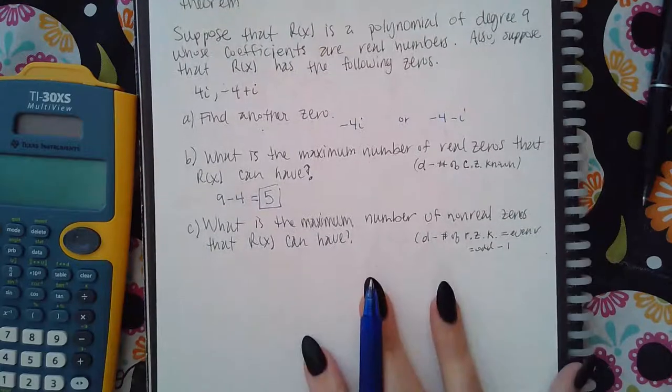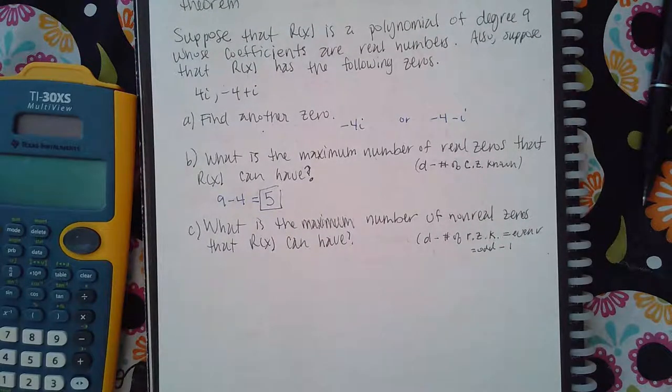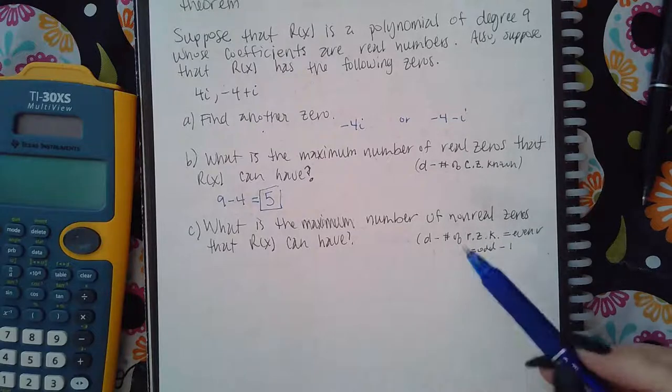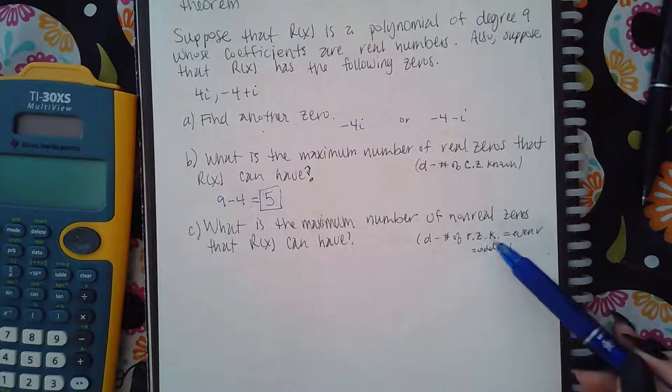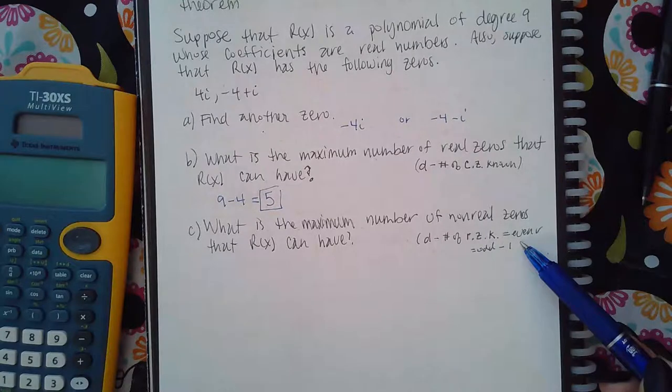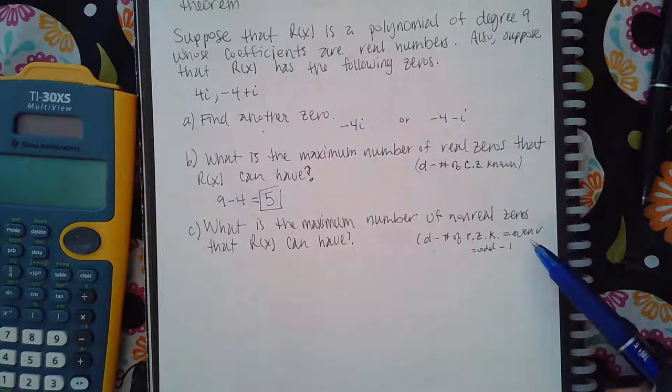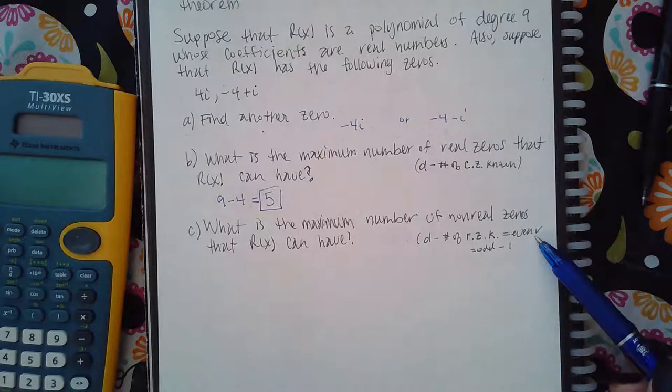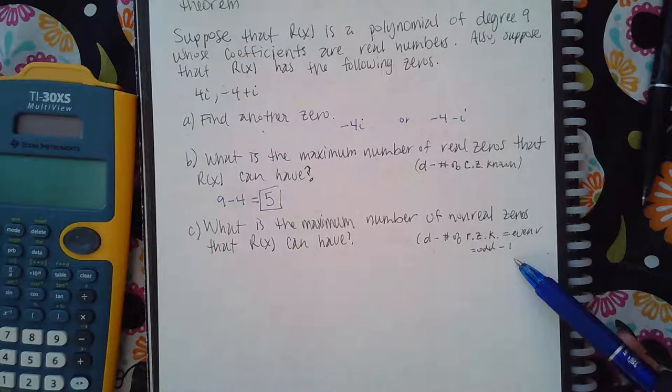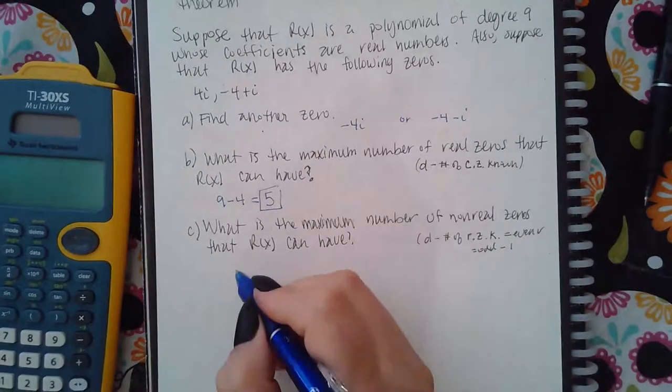What is the maximum number of non-real zeros that I could have? This one depends. You do the same thing as before: take the degree minus the number of real zeros that you know of. Then depending on what your answer is, you're going to either give that as the answer or subtract one. The degree is 9.